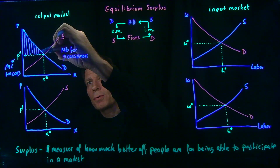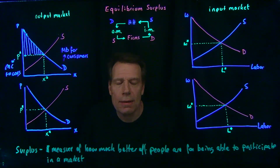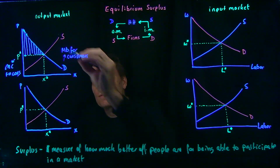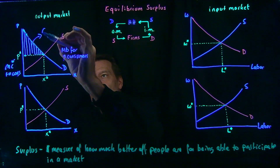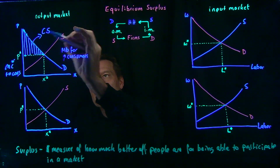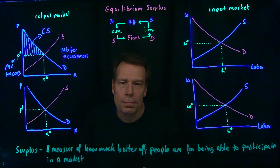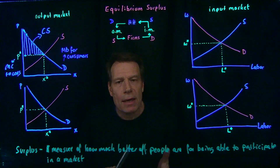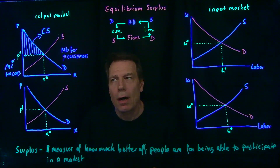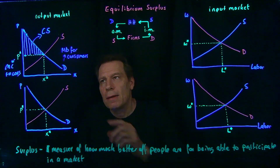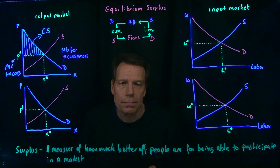If we add up all those surpluses for all the individual goods being consumed, we get what we call the consumer surplus. This is a measure of how much consumers or households in total are willing to pay to enter this market.